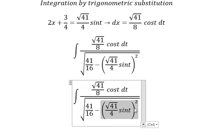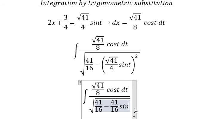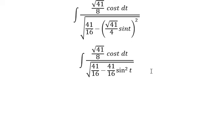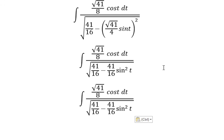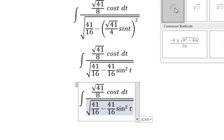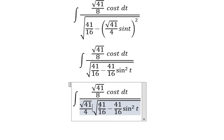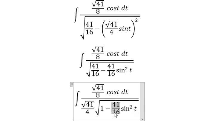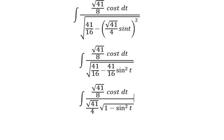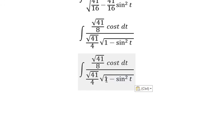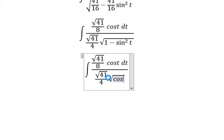We get square root 41 over 16 sine squared t in the denominator. Factoring out, we have square root 41 over 4. This changes to cos squared t.